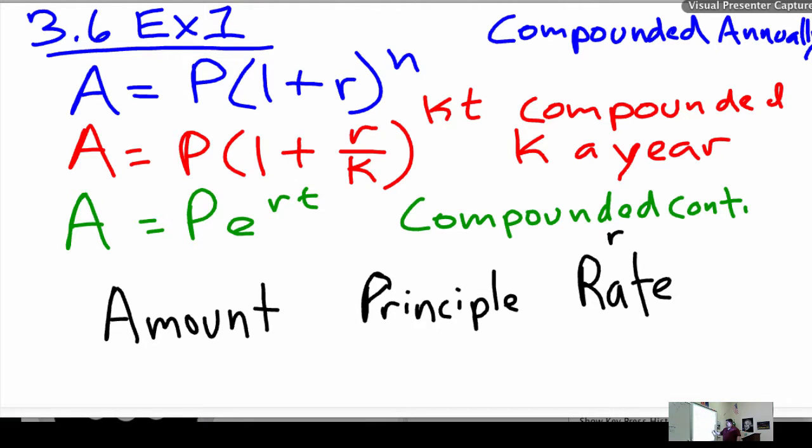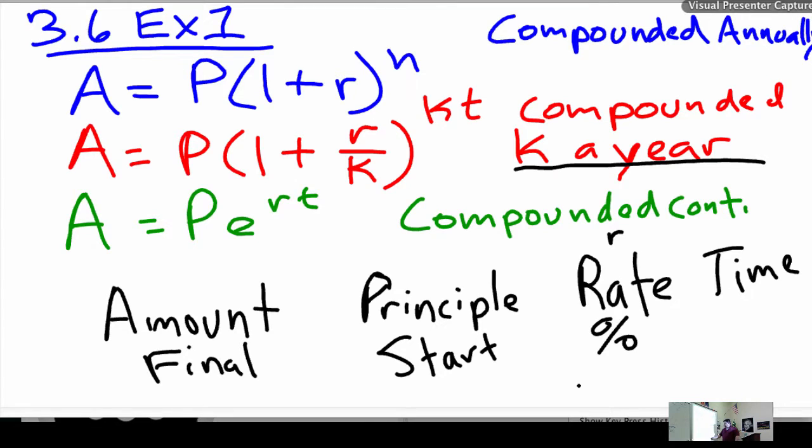K is K times a year. T is time. Did I mention all the variables? And E is the letter E. So, the principal is how much you start with. The final amount is the amount final. And the rate is usually a percentage, but it's written as a decimal. Okay?